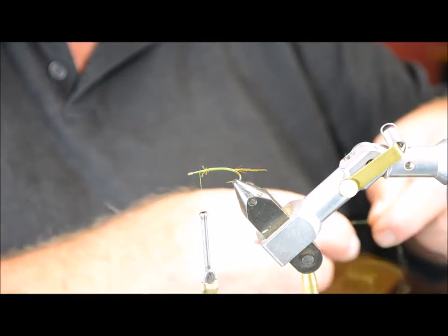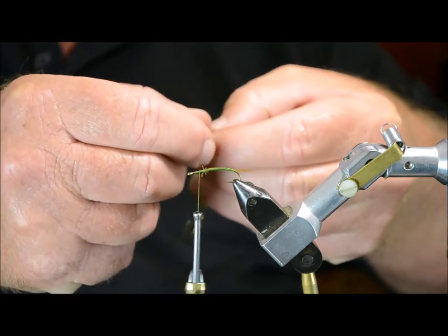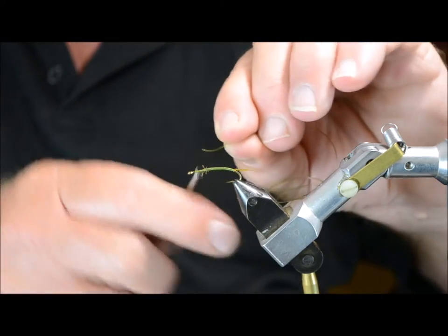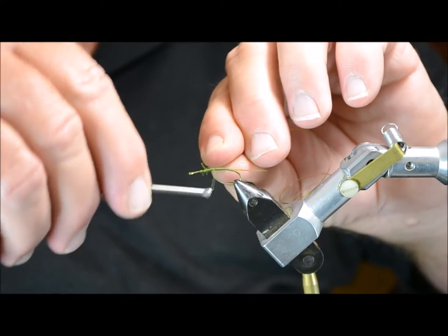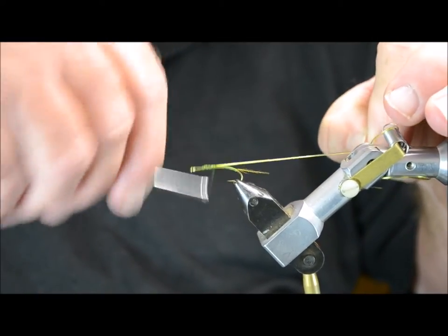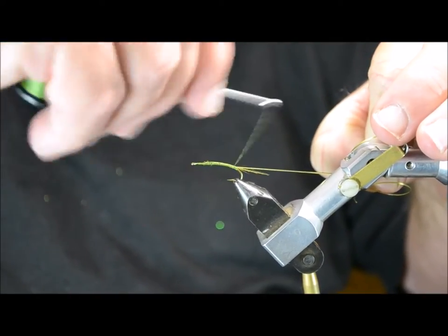And then we're using a little bit of vinyl rib. Very fine. It's a little bit hard to tell, but it's actually got a flat side and a round side. And you tie it with the round side down and the flat side up. And so when you wind it forward, fold it over, the round side is up. Just gives it a more segmented look.